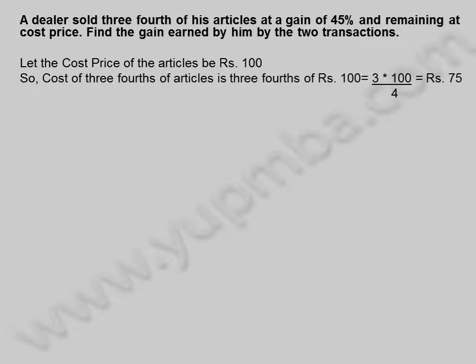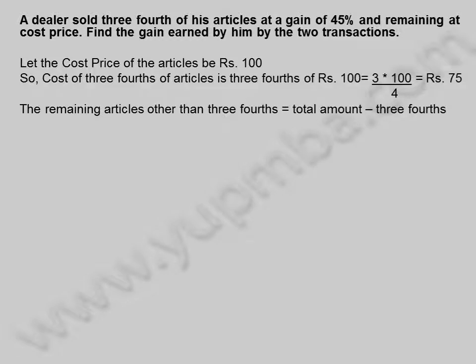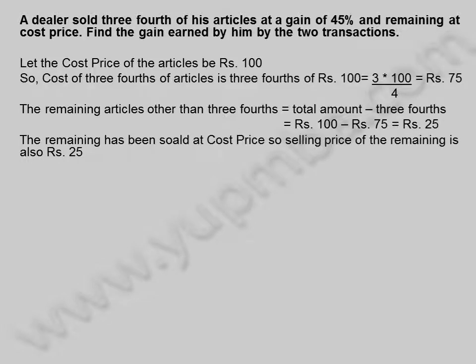Cost of 3/4 of articles is 3/4 of 100 rupees, equal to 3 into 100 divided by 4, equal to 75 rupees. The remaining articles other than 3/4 is equal to total amount minus 3/4, which is 100 rupees minus 75 rupees, equal to 25 rupees.